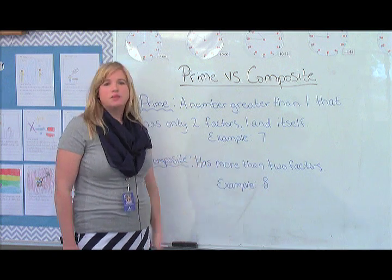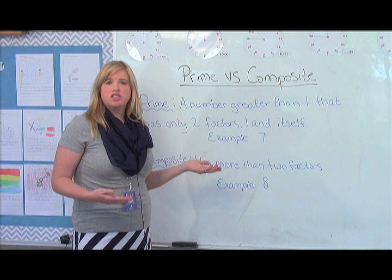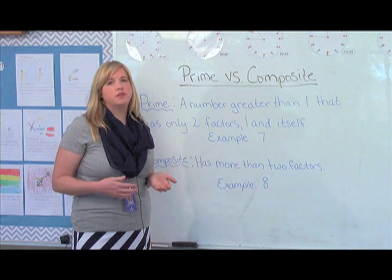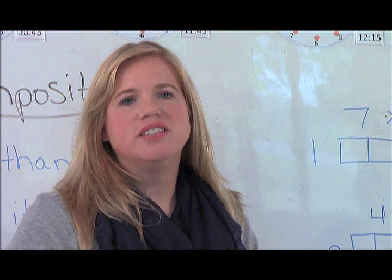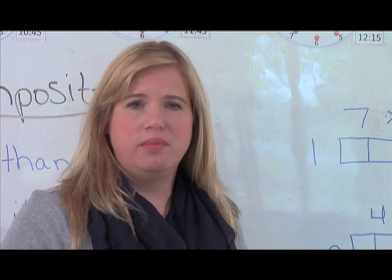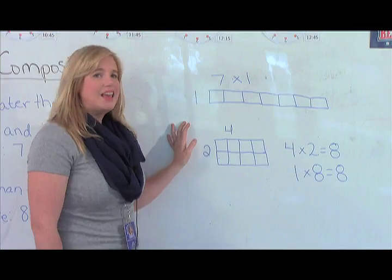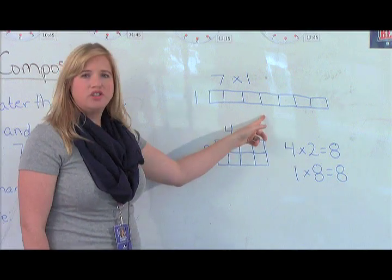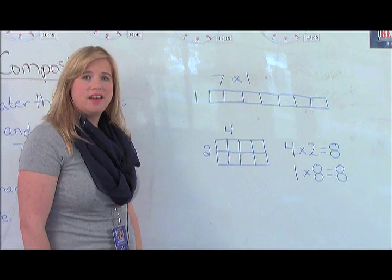Now we're going to look at some strategies to determine whether a number is prime or composite. Using area and array models can help model whether a number is prime or composite. If we take the number seven and try to draw out an array for seven,